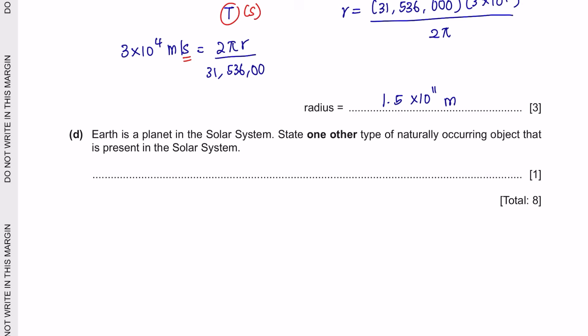Next question D. Earth is a planet in the solar system. State one other type of naturally occurring object that is present in the solar system. So you can mention any one of this. Alright guys, that's all for this video. Thank you so much for watching and supporting my channel. I really appreciate that. Good luck for your examinations and if you have any questions, just ask me in the comment sections below. Bye!